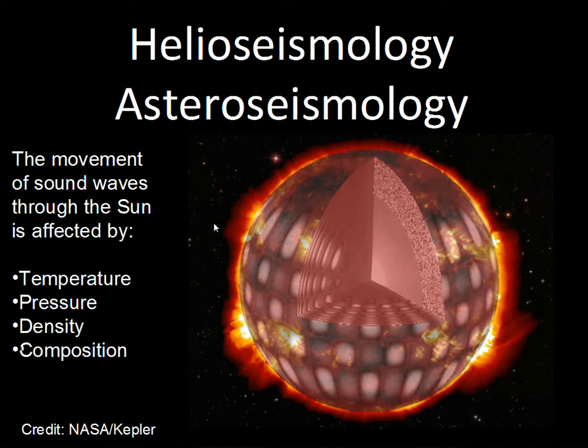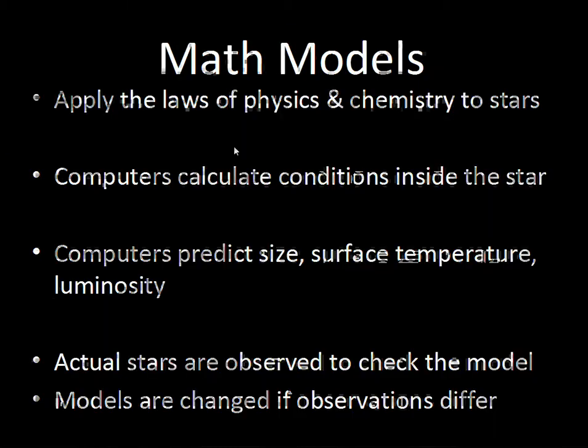Mathematical models of stars use the laws of physics describing how matter behaves. Stars on the main sequence are not far from conditions that can be approached in laboratories — physicists can't replicate the Sun's exact density and temperature, but these are not extreme conditions. The laws of physics and chemistry tested in laboratories can be applied to stars, allowing the building of computer models that calculate conditions inside a star.